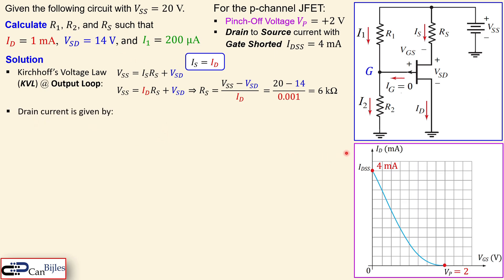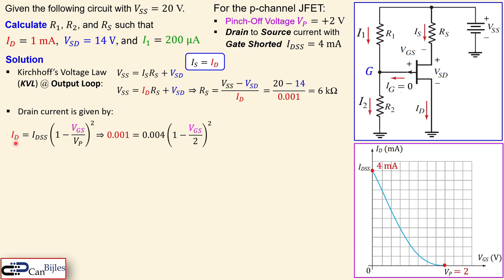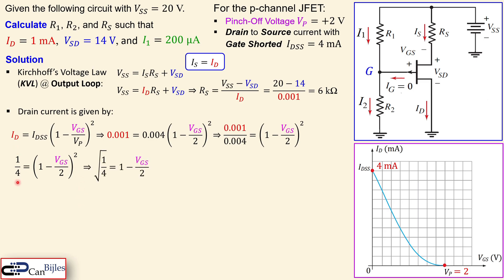The drain current for a JFET follows the square-law: ID = IDSS × (1 − VGS / VP)². Substituting ID = 0.001 A, IDSS = 0.004 A, and VP = +2 V, we get 0.001/0.004 = 1/4. Taking the square root of both sides gives 0.5 = 1 − VGS/2, so VGS = 1 V exactly.